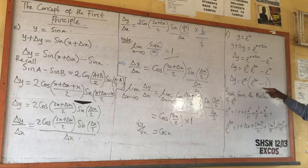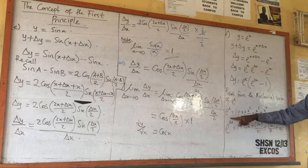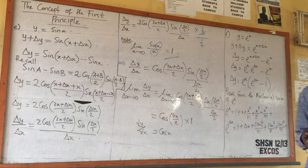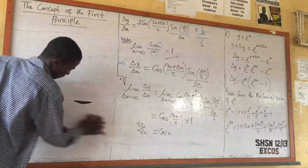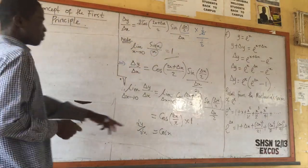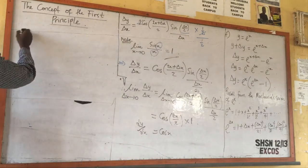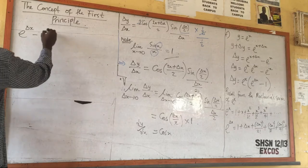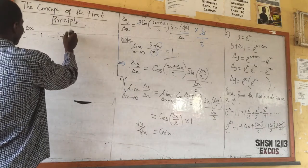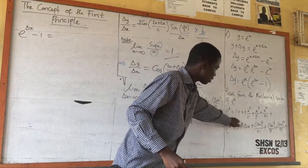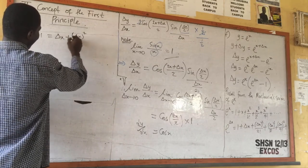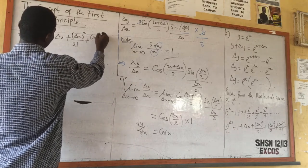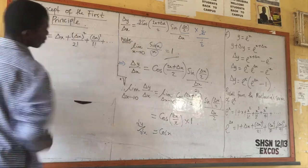Now, look at the brackets. I have exponential delta s minus 1. Bring this one to the other side so that I have exponential delta s minus 1. I bring the 1 inside to obtain: exponential delta s minus 1 is equal to delta s plus delta s squared over 2 factorial plus delta s cubed over 3 factorial, and it goes on like that.